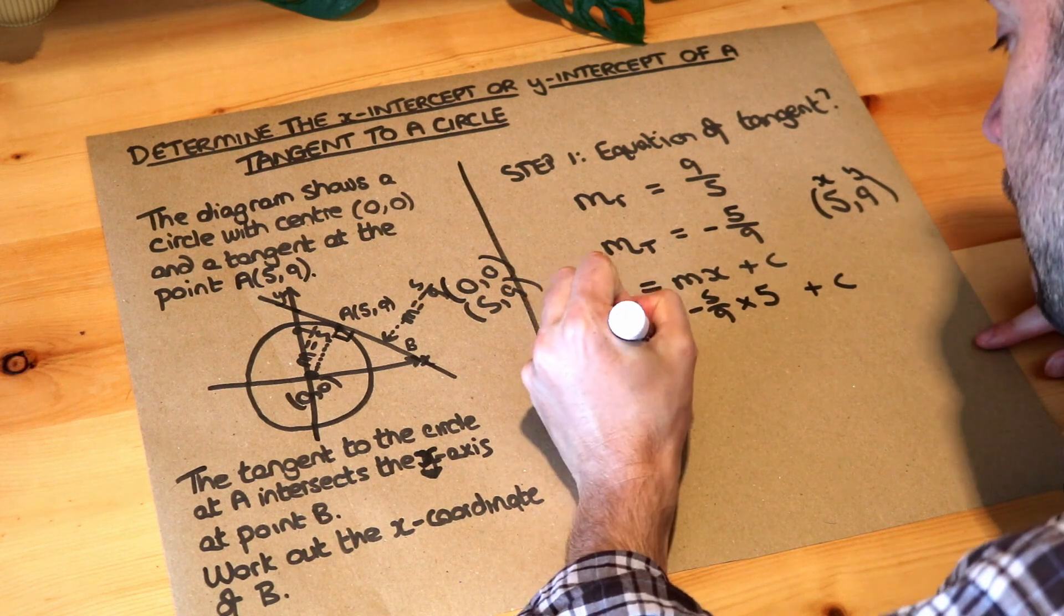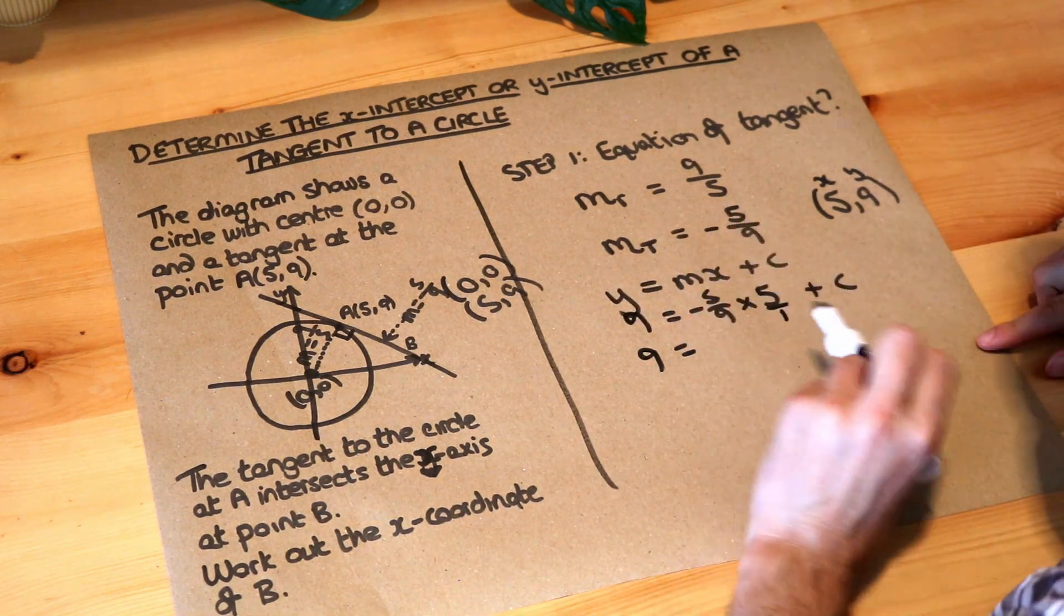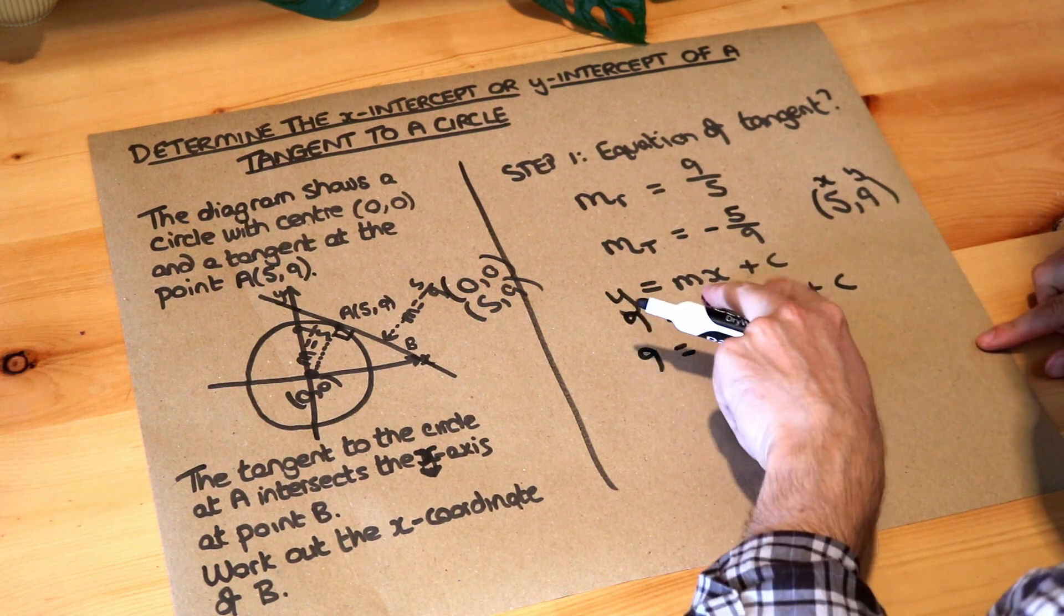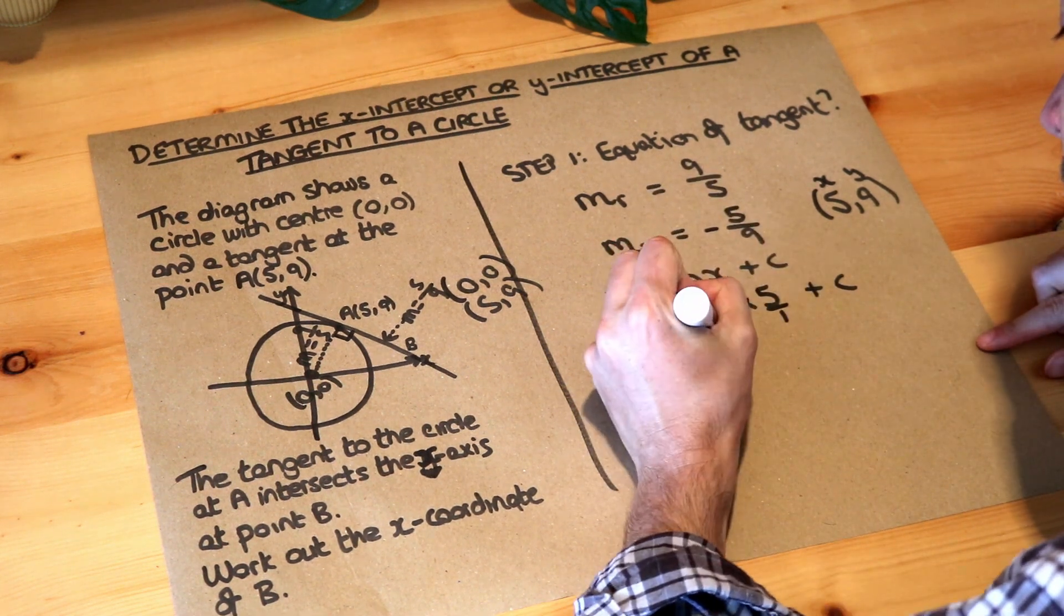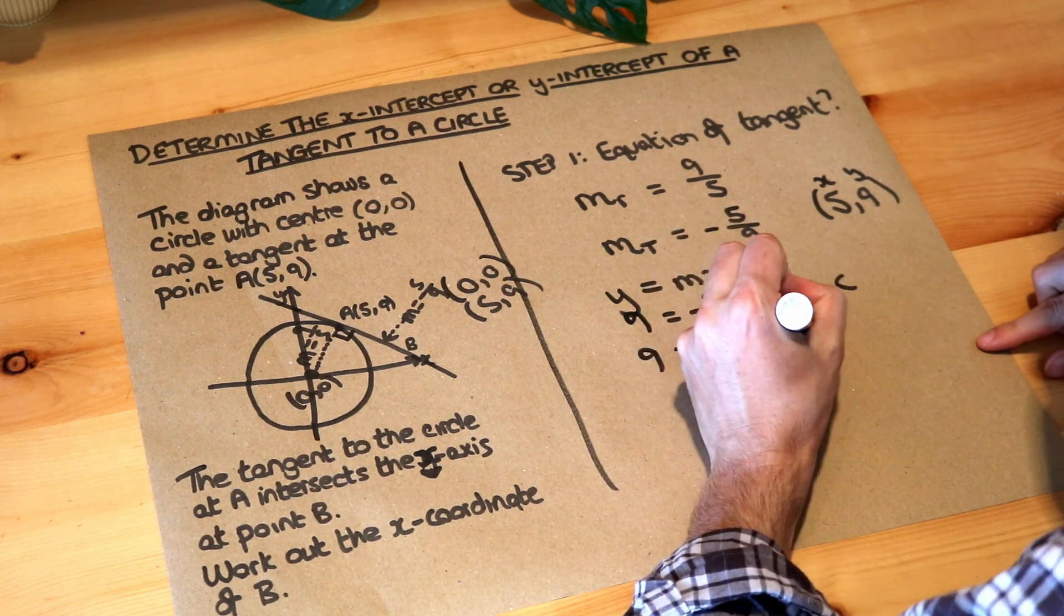And then if we just simplify a bit, if we just make that 5 over 1, then we can multiply these fractions together. So 5 times 5, we've got negative 25 over 9 times 1 is 9, plus c.